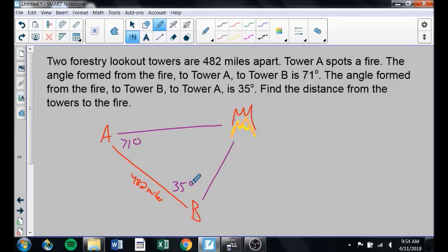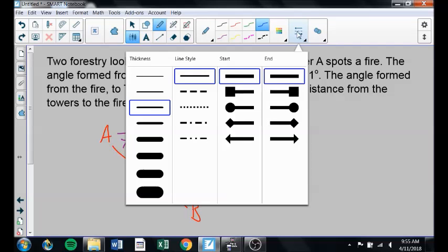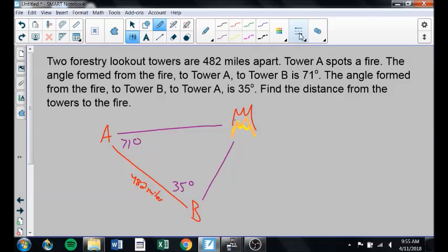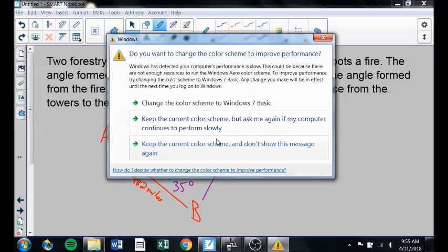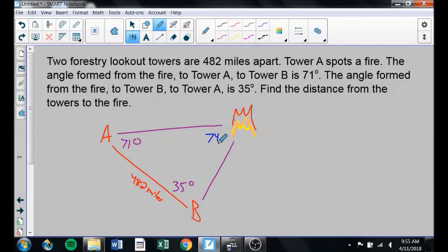This angle formed from the fire to tower B to tower A is 35 degrees. How far is the fire from each tower? This is another scenario where I don't have a right triangle, so I can't just use plain old sine, cosine, tangent. You'll find most things work out that way, at least initially. But I know that if this is 71 and this is 35, I can find this angle over here. And always just find whatever you can. I wasn't asked to find that angle, but if I can find that angle, which I can, I might as well, it makes everything a little bit easier. Well, 71 plus 35 is 106. Since everything has to add up to 180, this angle here is 74 degrees.